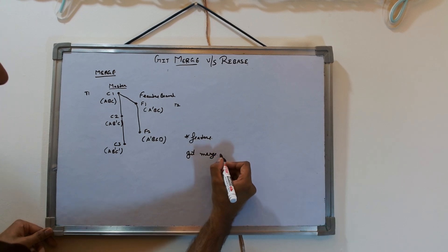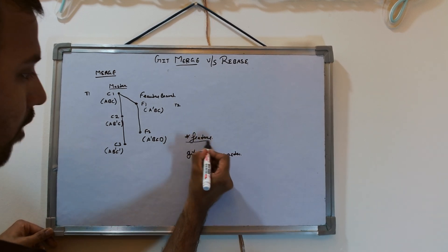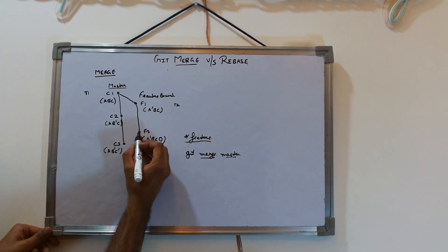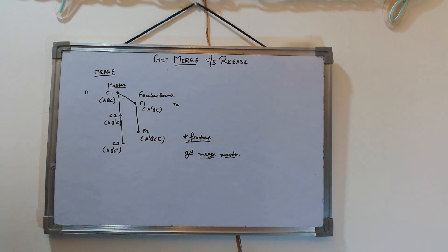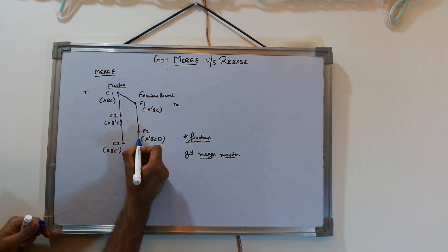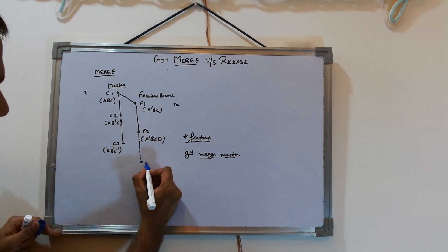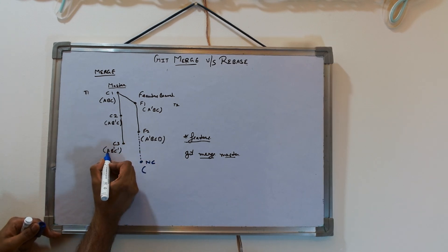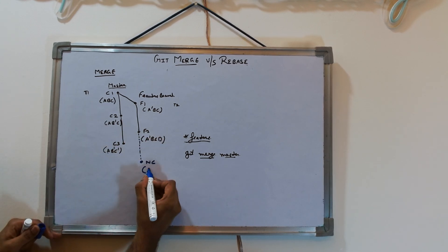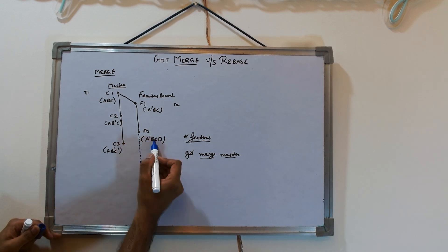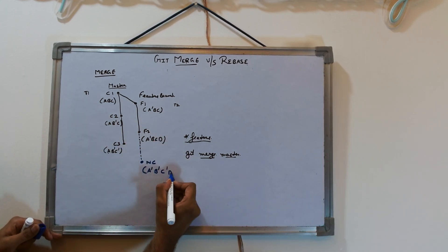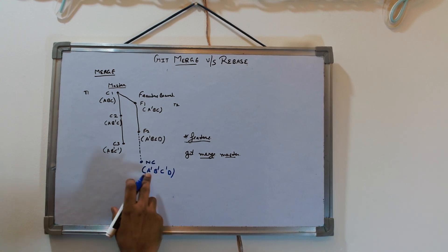Currently on the feature branch, you run the command `git merge master`. You are on feature branch and want to take the changes of master using the merge technique. What it will do is create a new merge commit, integrating all the changes — keeping A-dash, B-dash, C-dash, and D. Any conflicts that come up, you have to resolve them.